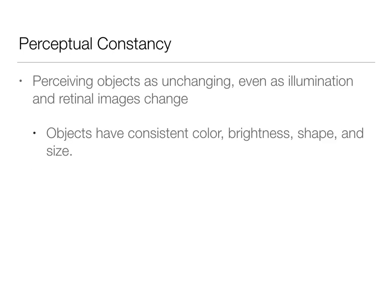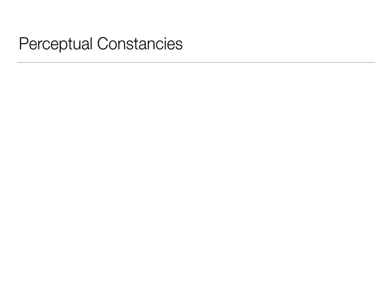The last topic is perceptual constancy — our understanding that objects don't change just because the retinal image might change. Your blue shirt in sunlight looks different than in your dark closet, but you don't think your shirt is actually changing color. Objects have constant color, constant brightness, constant shape, and constant size. Size constancy is the idea that an object's size doesn't change even when your distance from it varies.